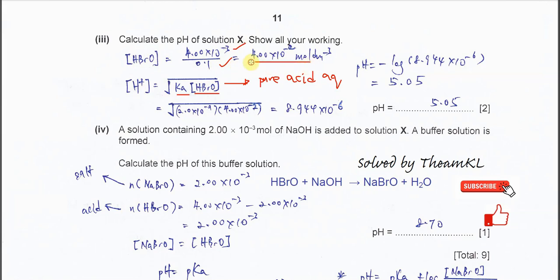After calculating the concentration, substitute it along with Ka into the equation. You get [H⁺] = 8.944 times 10 to the power negative 6. Taking the negative log gives pH = 5.05. That is how you calculate the pH of the acid solution.